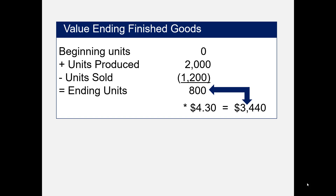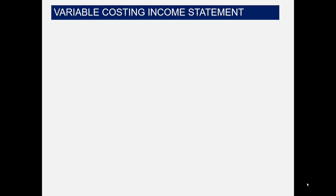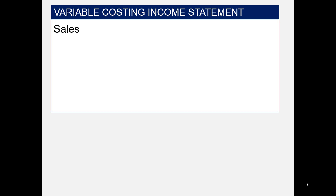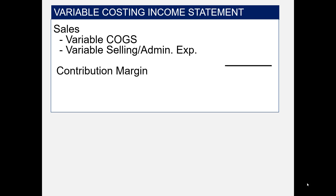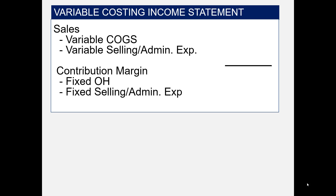Now let's turn our focus to variable costing. The first thing to know about variable costing is it uses the contribution margin income statement format: sales minus variable costs — which include variable cost of goods sold and variable selling and administrative expenses — giving us contribution margin. Then we subtract fixed costs: fixed production cost (fixed overhead) and fixed selling and administrative expenses, to arrive at net operating income.